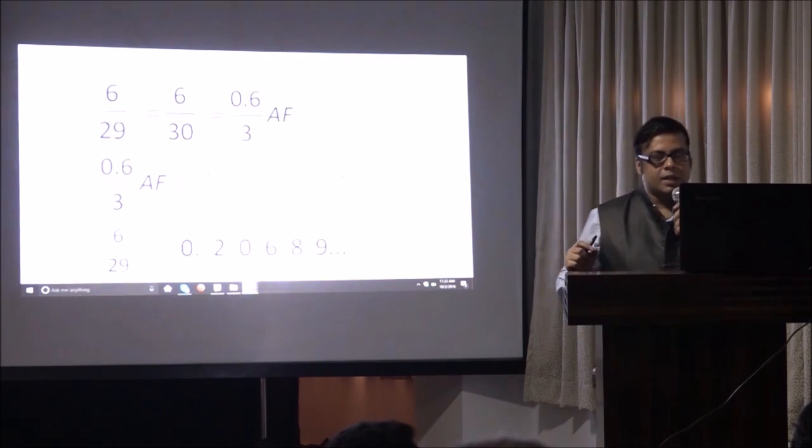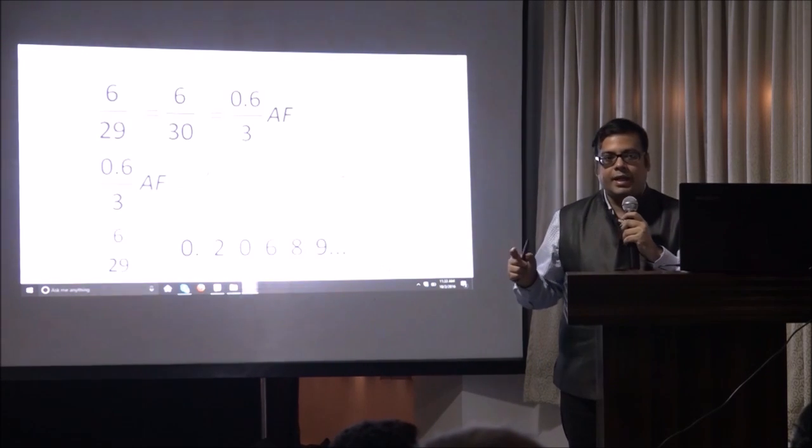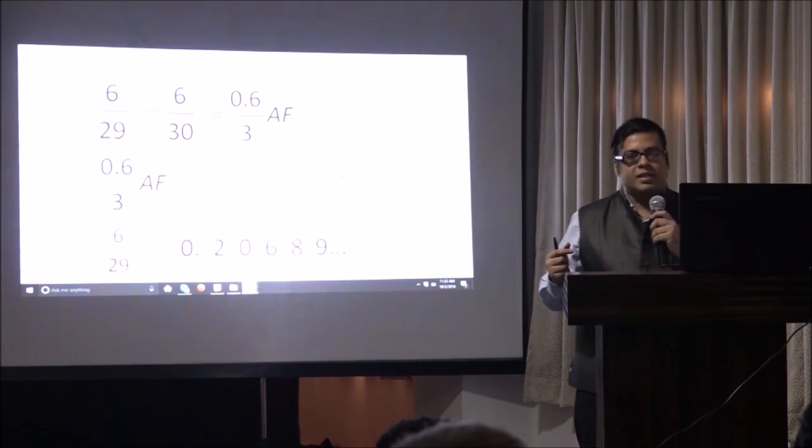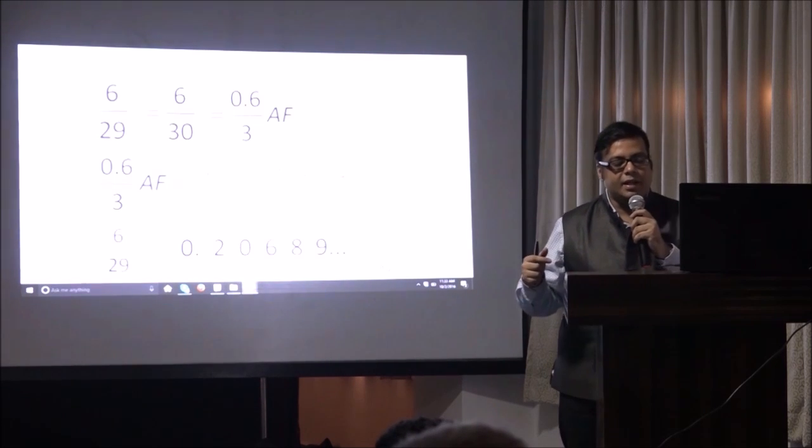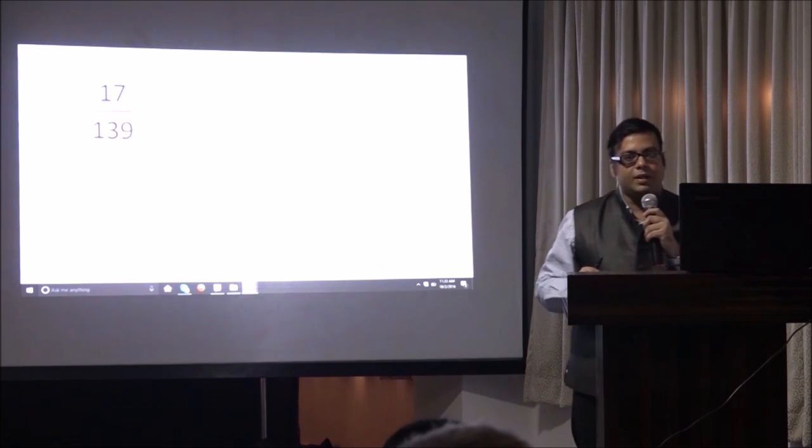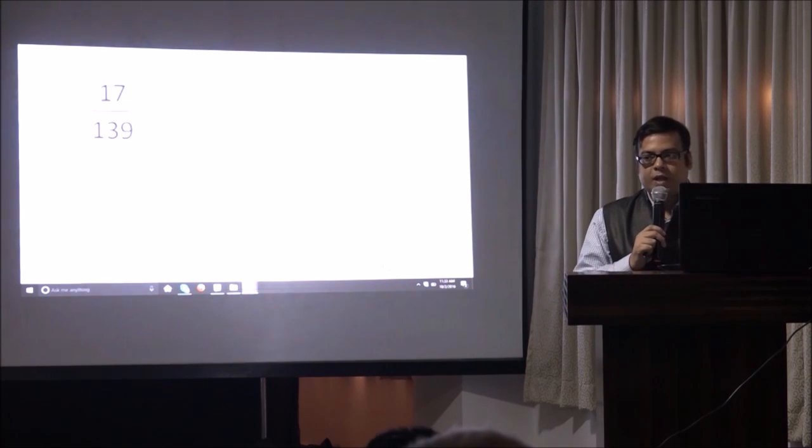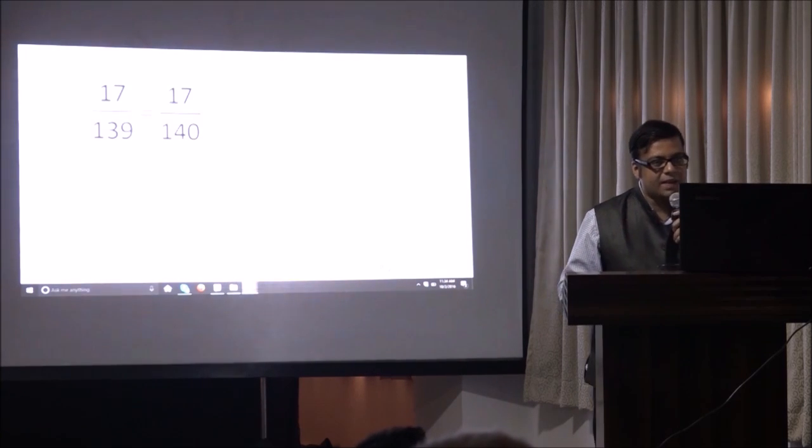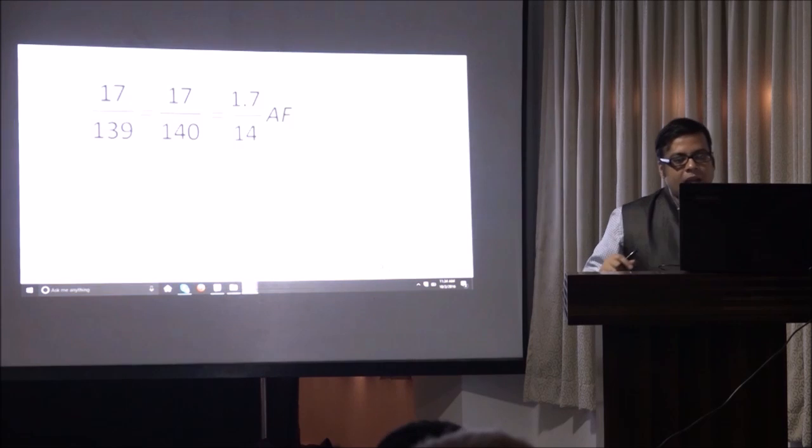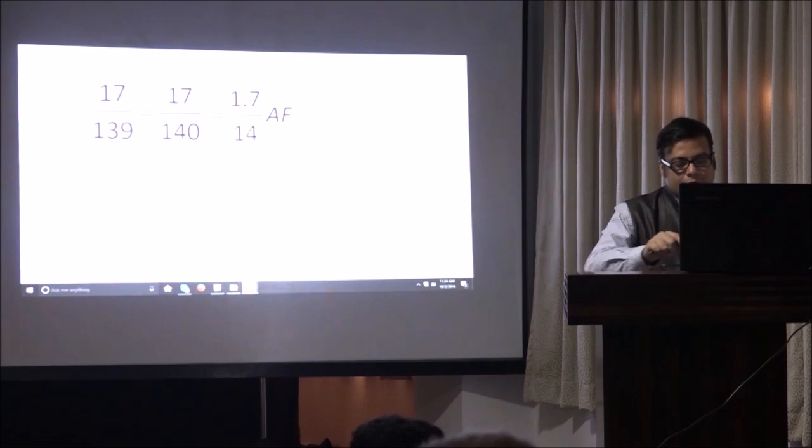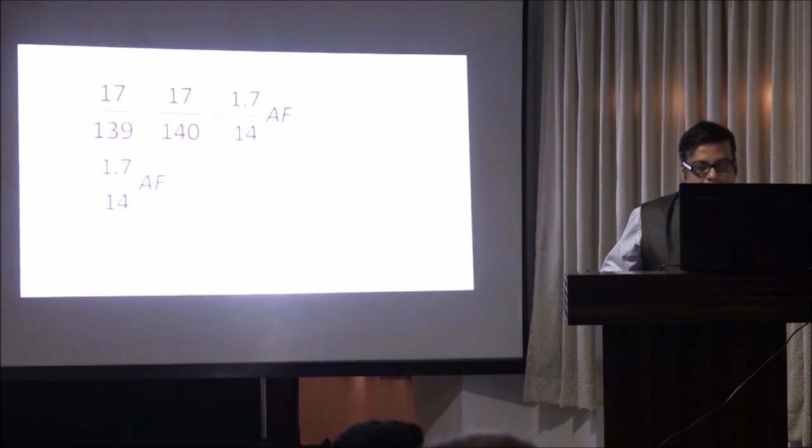Mind you, there's something to note here that the divisor always ends in a 9. So when we come to some other problem where it's 8 or 7, there's a different technique which we can take it outside. So let's do the last sum here today, which is 17 by 139. Let's quickly do this. So 139 is nearest to 140. So I have 17 by 140. That becomes 1.7 by 14 because I divide the numerator and denominator by 10. So now we can start again.